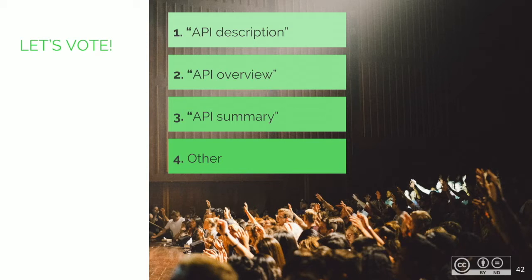There is one more thing to discuss. As I mentioned at the beginning of my presentation, 'API description' is not the best name for this documentation type, because users sometimes think it is equivalent with reference docs. I asked a couple of developers which could be an improvement, and I have three different versions for your review: the first is 'API Description' — the original one — then 'API Overview,' and 'API Summary.'